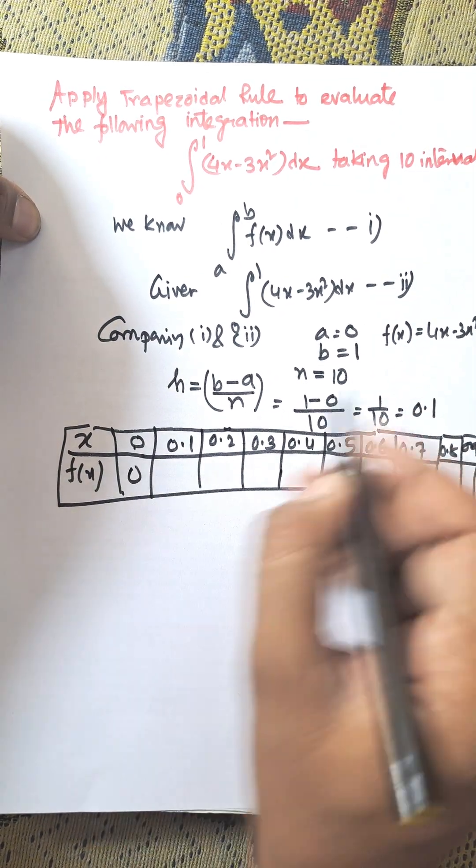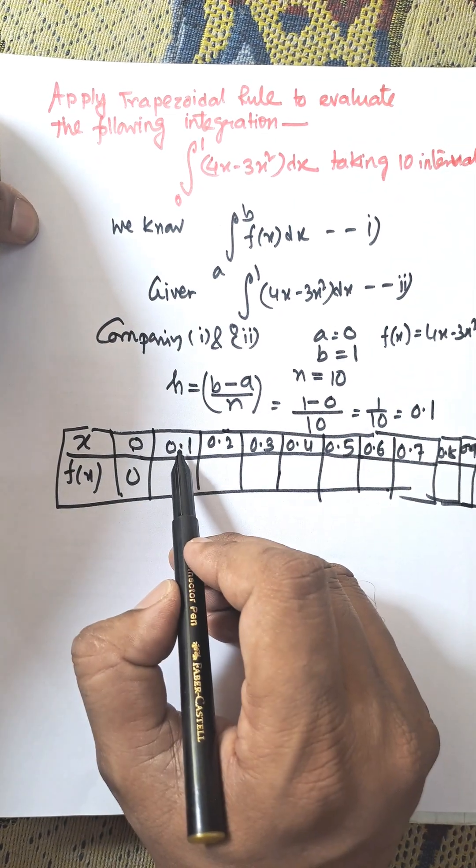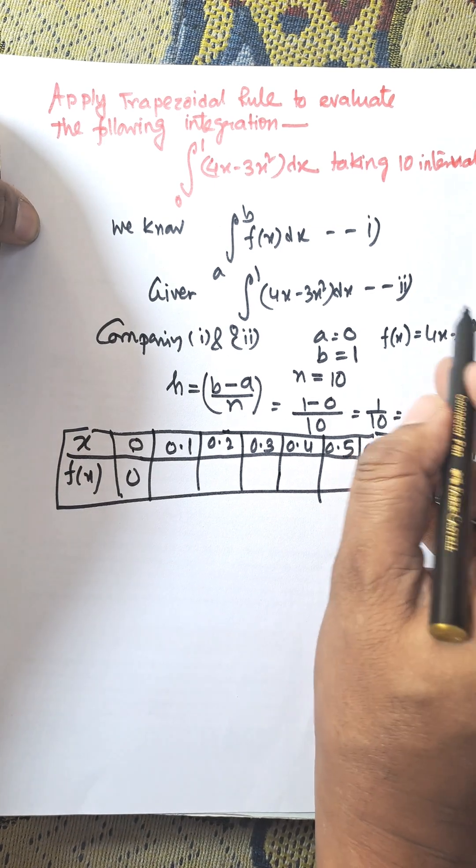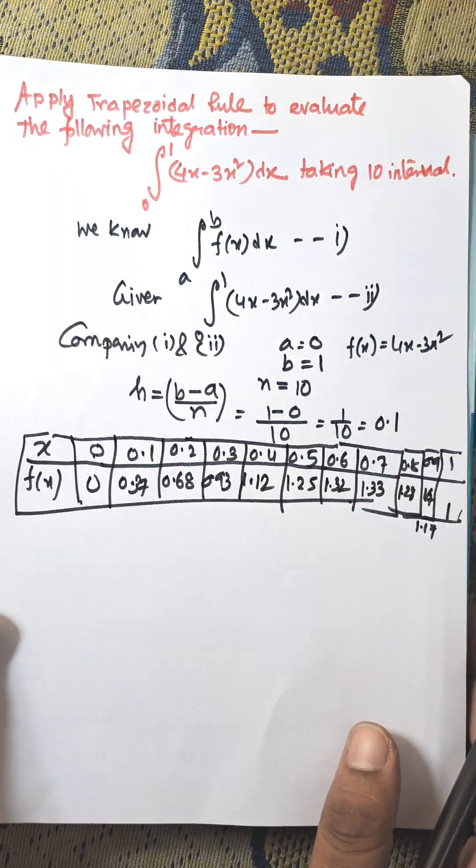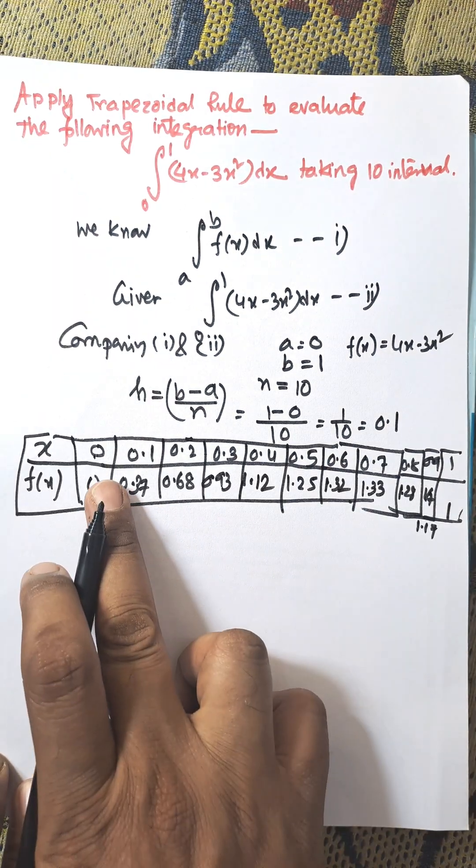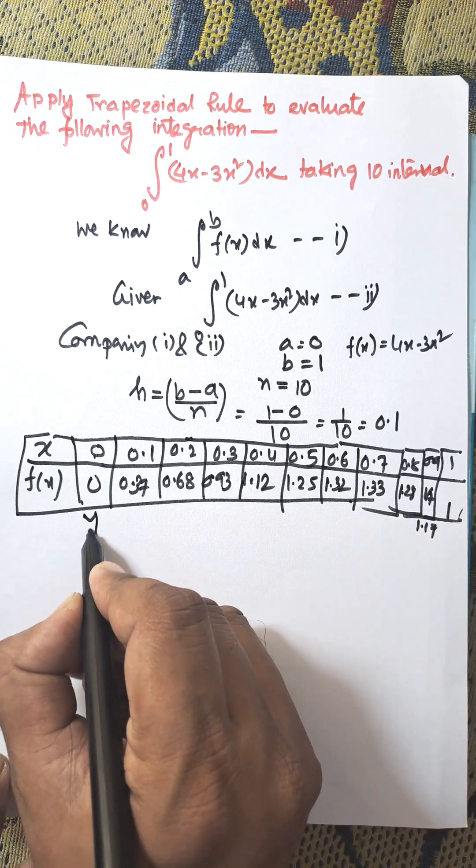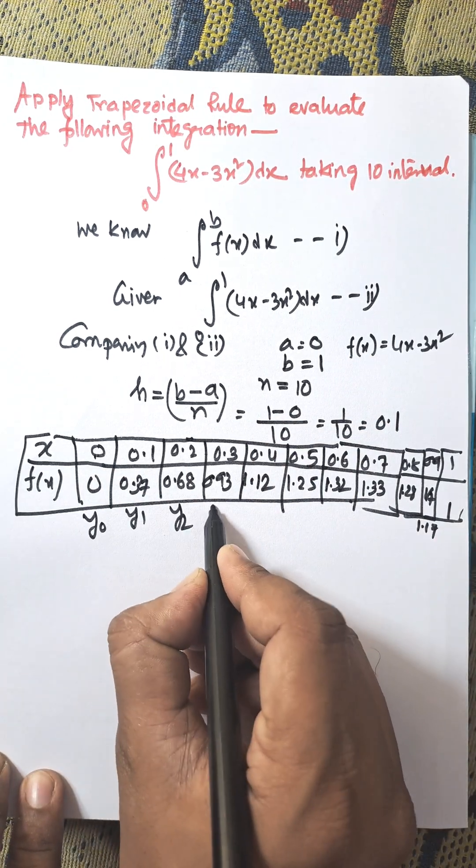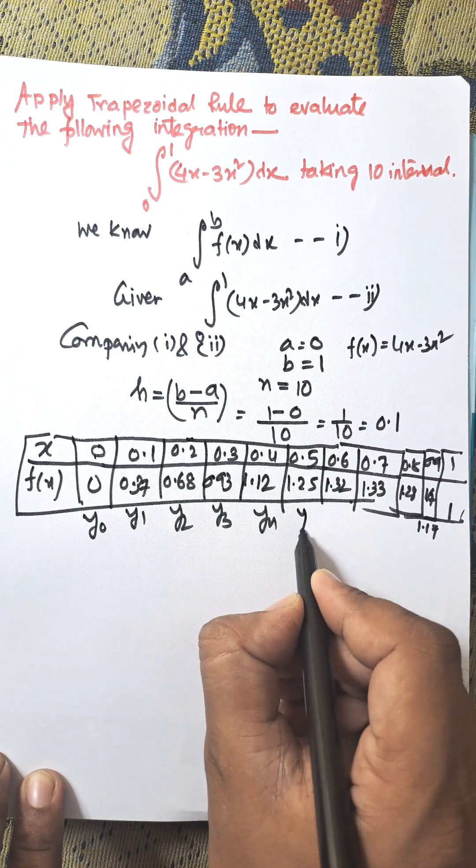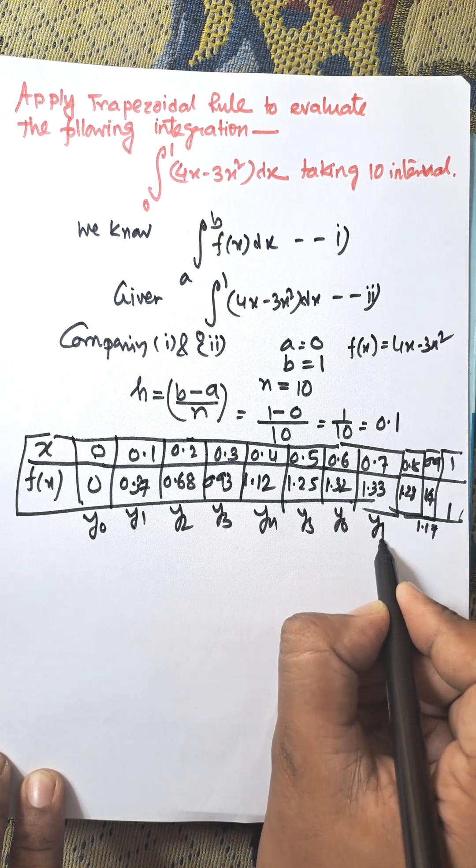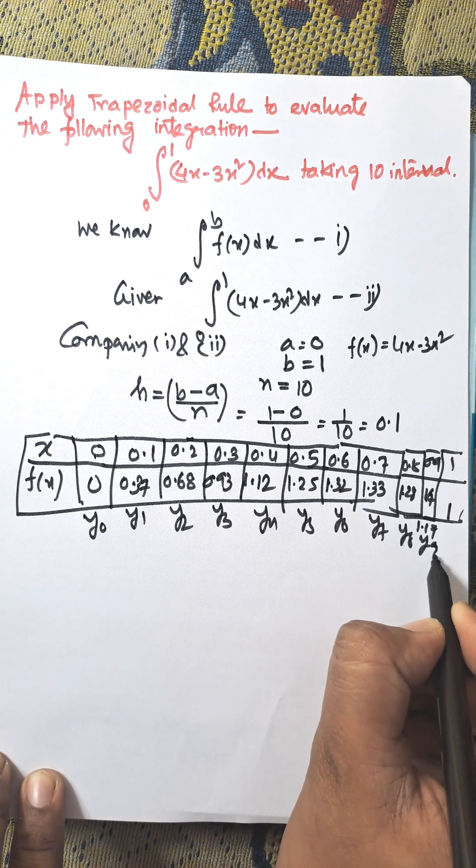Now, putting x = 0 in f(x), we get 0. When x = 0.1, you need to calculate this using a calculator. After calculating all the values by substituting each x into f(x), we get these values. These are labeled y₀, y₁, y₂, y₃, y₄, y₅, y₆, y₇, y₈, y₉, and y₁₀.